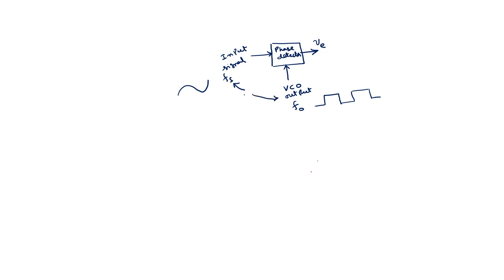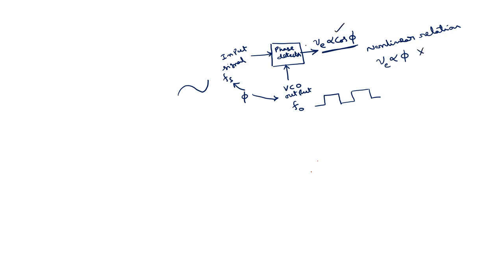If you have the phase difference between these two signals as phi, in the last lecture we proved that Ve is proportional to cos(phi). We discussed two drawbacks of the analog switch type phase detector: one is this non-linear relation — that is, instead of Ve being directly proportional to phi, it is proportional to cos(phi). The second one is that Ve also depends upon the amplitude of the input signal, which we call Vs. Ve is also proportional to Vs, which is undesired.